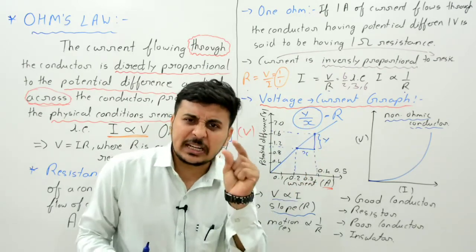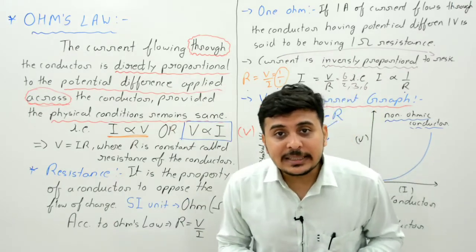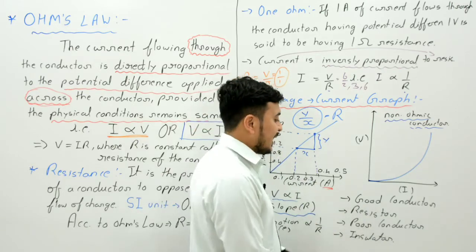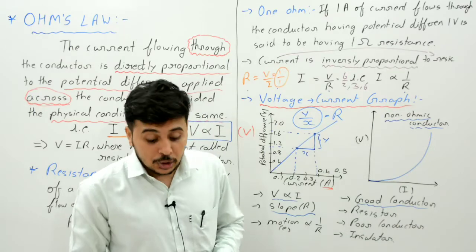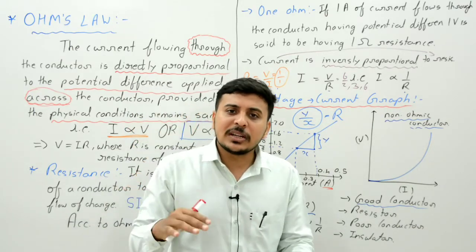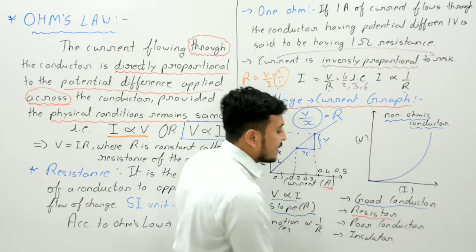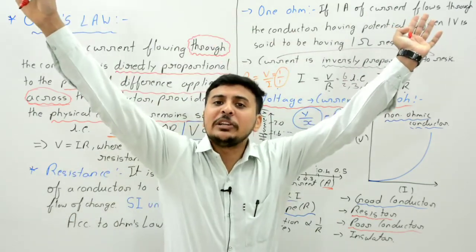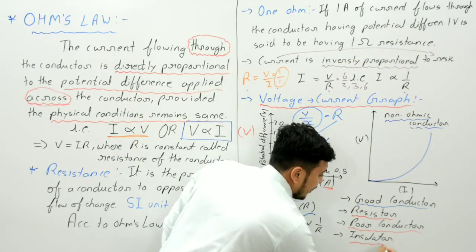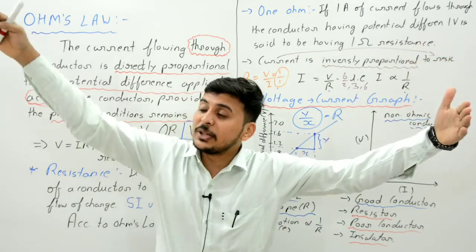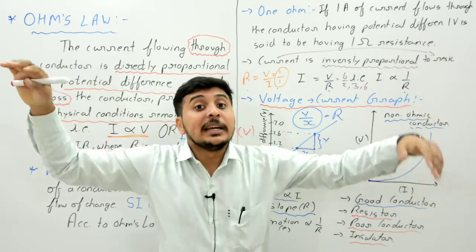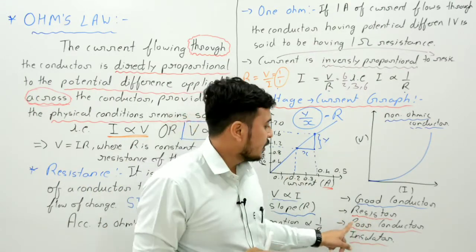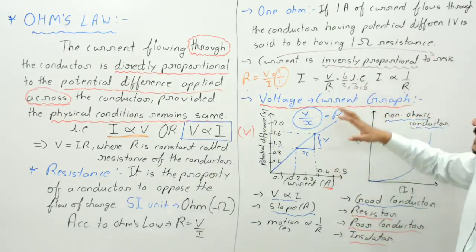A conductor in which resistance is very low is a good conductor — resistance barely opposes the current. If resistance is very high — extremely infinite — it is called an insulator. In between: a little resistance is called a resistor; a little more is called a poor conductor. So good conductor means nearly zero resistance, insulator means extremely infinite resistance.